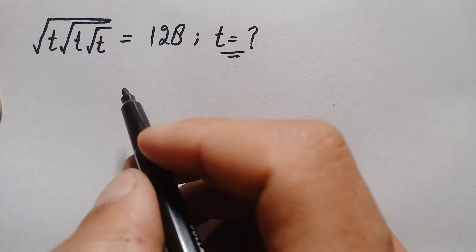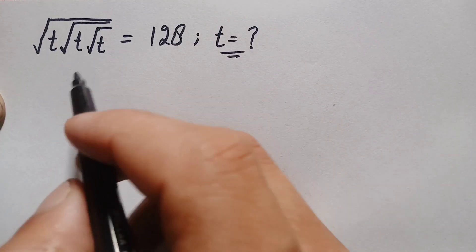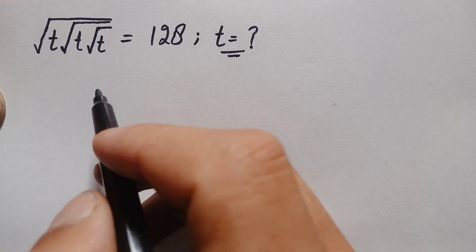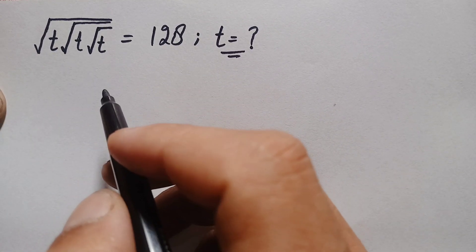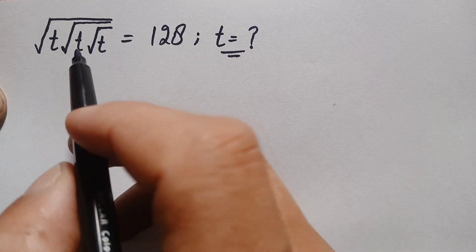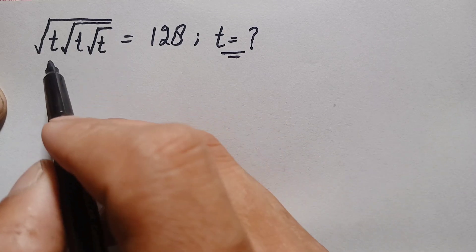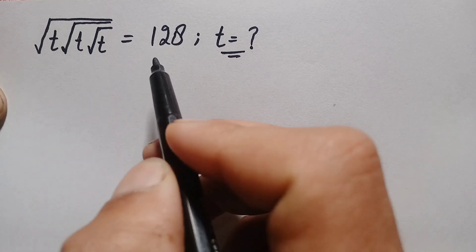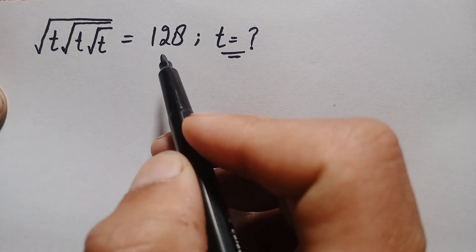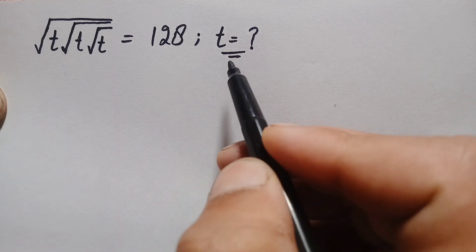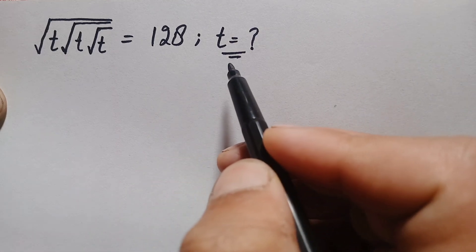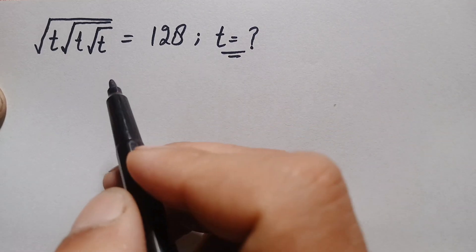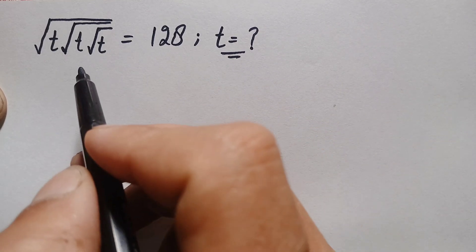Hello everyone, you are welcome. How to solve this interesting square root math problem: the square root of t, times the square root of t, times the square root of t, is equal to 128. Here we will try to find out the value of t and how we can solve this math problem.